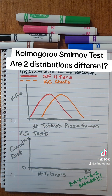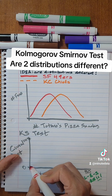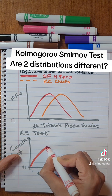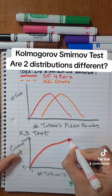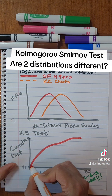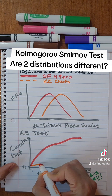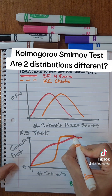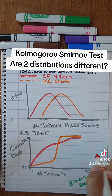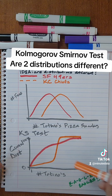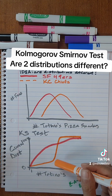So what does this cumulative distribution look like for 49er fans? Well, most of them aren't eating that many Totino's, so maybe you have a huge hump in the small numbers and then maybe it tapers off for the larger numbers. Vice versa for the Chiefs fans — not many are eating small amounts, and maybe there's a huge spike for the big amounts, say they're buying like family packs, for example. So here we have the cumulative distribution of Totino's consumption for 49ers versus Kansas City Chiefs.